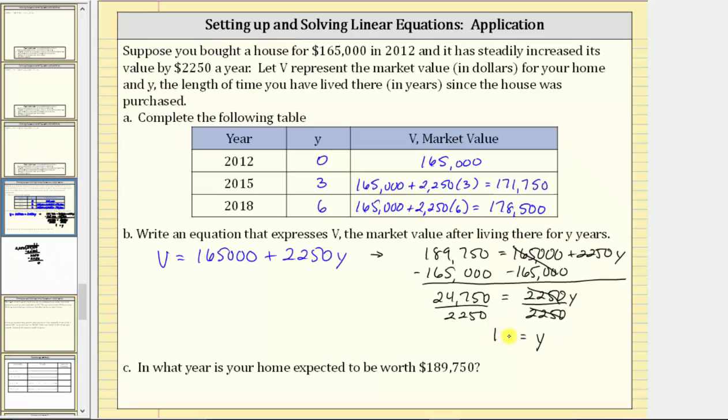So because Y is equal to 11, we know after 11 years, you can expect your home to be worth $189,750. But that's not the question. The question asks, in what year is your home expected to be worth this amount? Well, the base year, the year you purchased the home, was 2012. So starting with the year you purchased the home, we need to add 11 years to determine in what year the value is expected to be $189,750. The sum is 2,023. So now we can say the home is expected to be worth this amount in the year 2023.